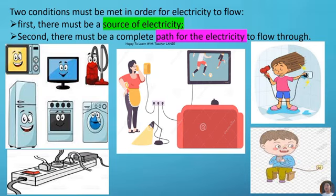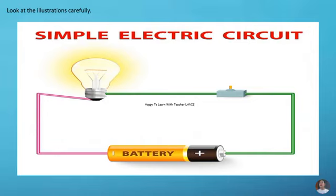First, there must be a source of electricity. Second, there must be a complete path for the electricity to flow through. Look at the illustrations carefully.